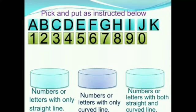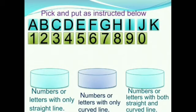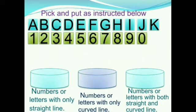You all like activities, right? So let us do an activity. In this activity, we have some letters and numbers and three boxes. This is a game. If the letter or number has only straight lines, we put it in the first box. If it has only curved lines, we put it in the second box. If it has both straight and curved lines, we put it in the third box.